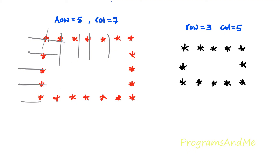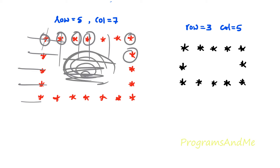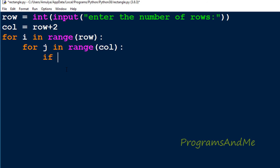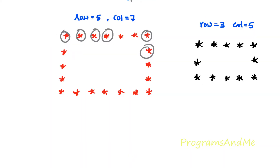In the pattern, in some row and column positions we want to print a star, and in other places we want to print a space. To determine where to print a star and where to print a space, we use an if-else conditional statement. In the if condition I will mention the places where I want to print a star. Let's see which rows and columns need a star — rows are 0 through 4 and columns are 0 through 6.